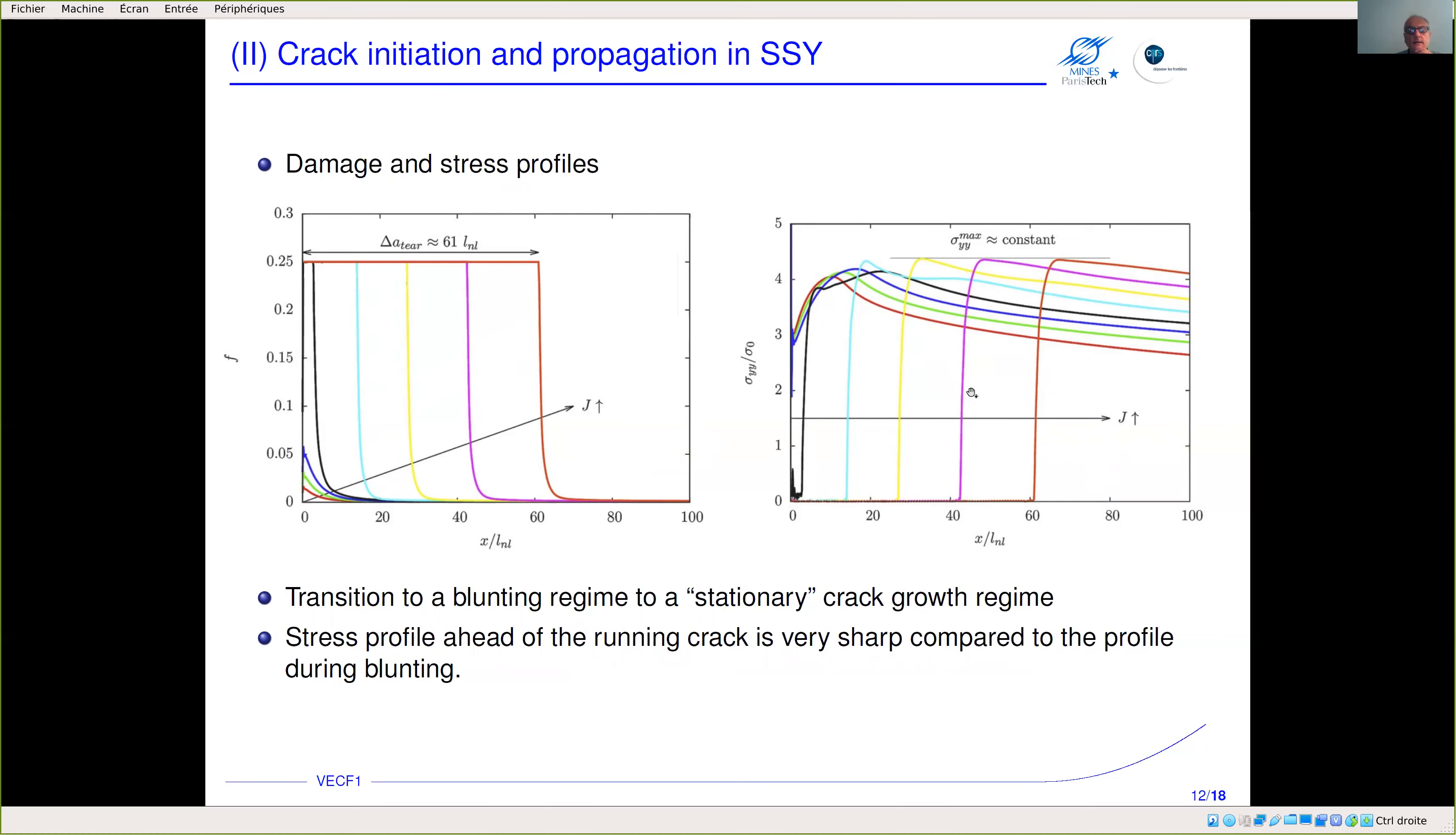What we can notice here, which was not so much expected, is that we indeed retrieve the stress profile ahead of a blunted crack but not propagating. As soon as the crack propagates, then this stress profile becomes much sharper, and thanks to the non-local model we can nonetheless very accurately describe it.